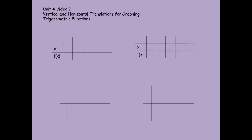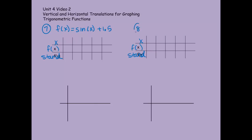Alright, I'm going to give you two more to try. Do it very similar to how we did the phase shifts — pause and then come back and check. Remember to keep x values the same and change the standard y values, since we're working with vertical shifts. Number 7 will be f of x equals the sine of x plus 1 and a half. And number 8 will be f of x equals the cosine of x minus 2 thirds.